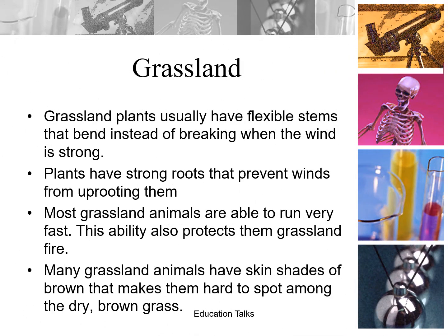Grassland plants usually have flexible stems that bend instead of breaking when the wind is strong — just the way aquatic plants adapt to ocean currents. These plants have strong roots that prevent them from being uprooted by winds, and they also help avoid soil erosion.